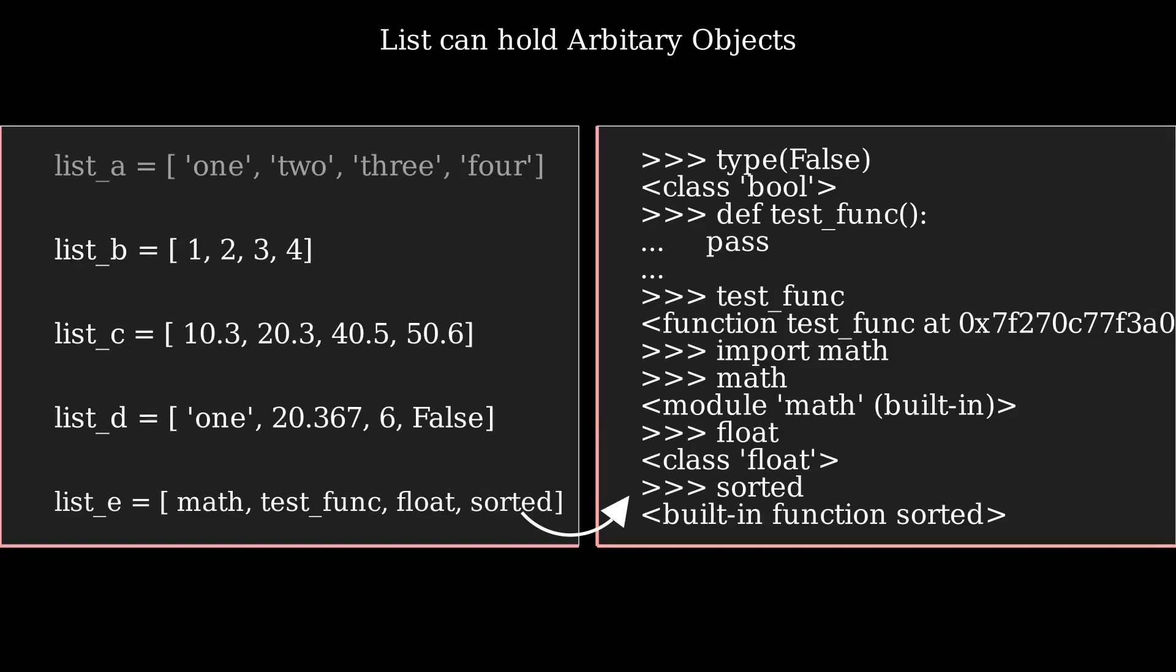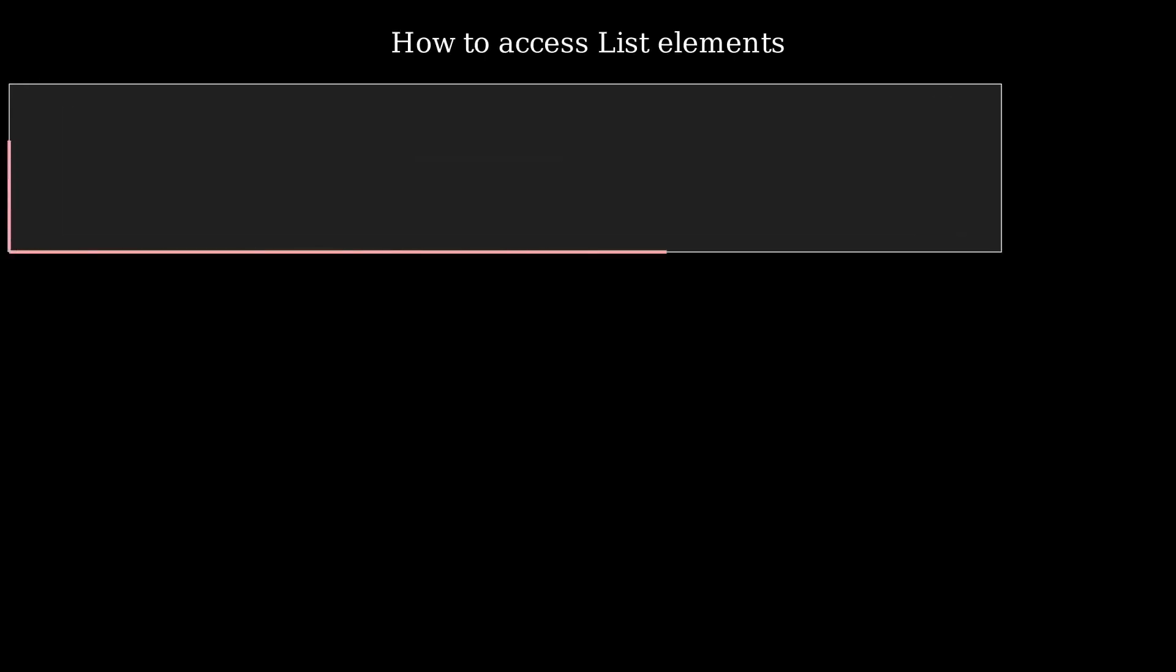Individual elements in a list can be accessed using an index in square brackets. This is similar to accessing individual characters in a string. List indexing is zero-based. Consider a list listE with four elements having an index from zero to three.